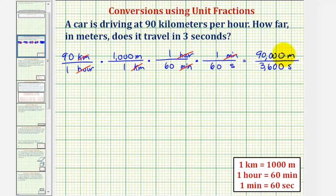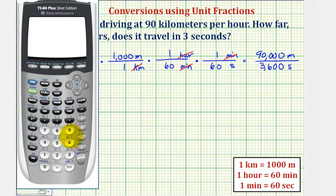Again, we'll now convert this to a unit rate by performing this division. So 90,000 divided by 3,600.